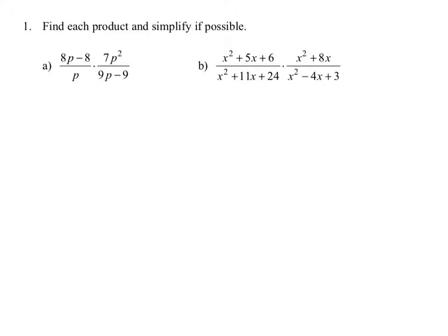Begin by factoring each numerator and denominator when possible. The numerator — you can factor out a common factor of 8 to get 8 times the quantity of p minus 1, all divided by p. Remember, you don't want to cross out any variables if it's next to a plus or minus sign. You can only divide out common factors.